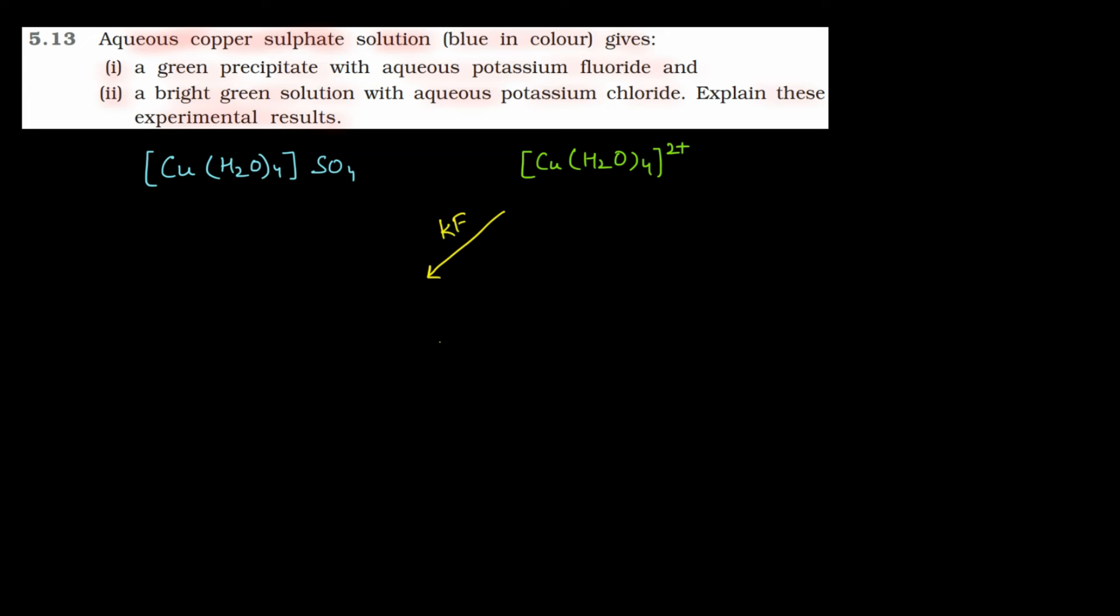F- ions are stronger ligands than H2O. The F- ions will replace the H2O ligands, forming [CuF4]^2-, which is tetrafluorocuprate in -2 oxidation state. It will give you green precipitate. This is the first part.